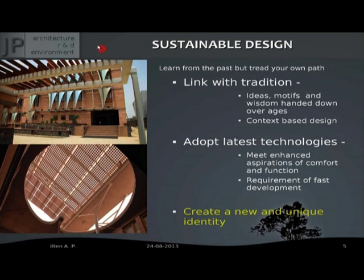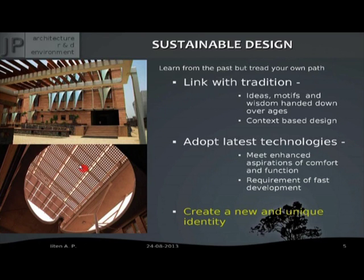Here we see a building by architect Ashok Lal. He has used an innovative shading technique and photovoltaic solar panels over the roof and courtyard. It looks nice. Sustainable architecture can use past experience but in a new manner — you can become innovative and it can look nice also. We can create a new and unique identity by marrying old traditions with new technology.